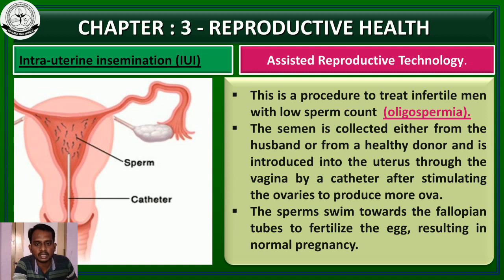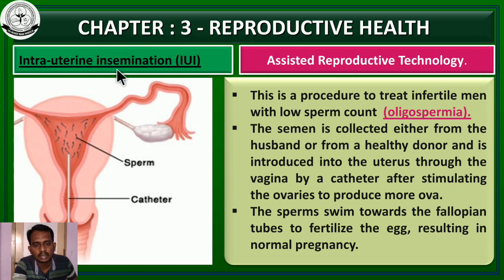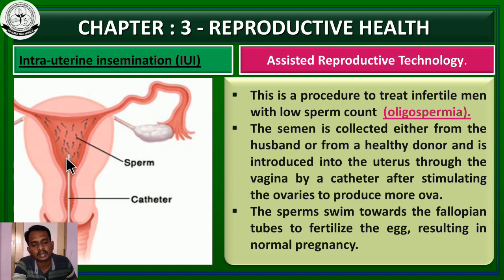The first technique in assisted reproductive technology is intrauterine insemination. The exact answer is also given in the title — intrauterine insemination. Insemination means inoculation of sperm into the female reproductive tract. Intrauterine means within the uterus. This is a technique which involves inoculation of sperm into the female reproductive tract or into the uterus by an artificial method.